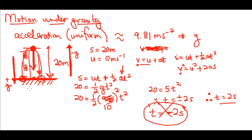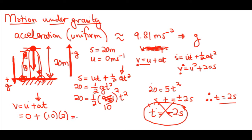From here we can calculate the final velocity — how fast it hits the ground. Using v = u + at: v = 0 + 10 × 2 = 20 meters per second. So the object hits the ground at 20 meters per second.